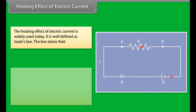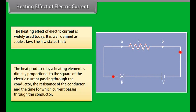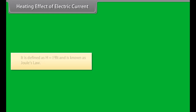Resistors in series: Resistors connected in series are those where current flows through them one after another. Here, the current depends on the applied voltage, the number of components, and the nature of components in the circuit.